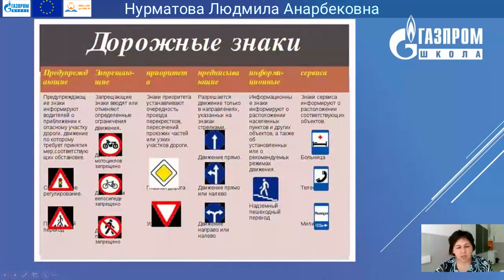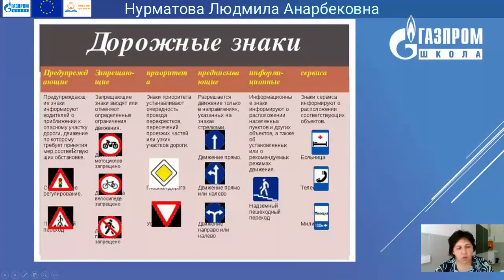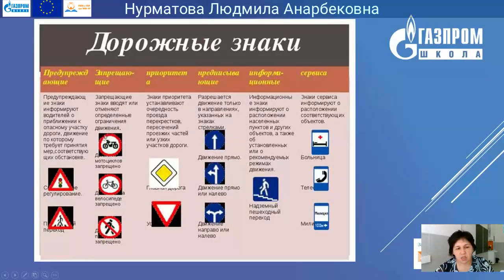Вот такие дорожные знаки. Запомните: у нас предупреждающие знаки и запрещающие. Предупреждающие знаки информируют водителей о приближении к опасному участку дороги, движение по которому требует принятия соответствующих мер. Например, светофор или регулирование и переход. Запрещающие знаки вводят или отменяют определённые ограничения движения. Они в красном кругу: движение мотоциклов запрещено, движение на велосипеде запрещено, переход людей в этом месте тоже запрещён.